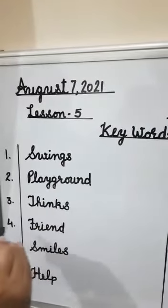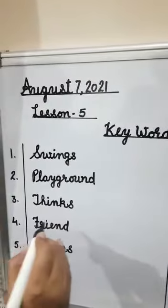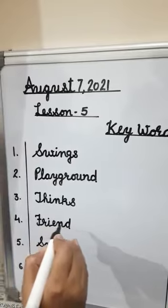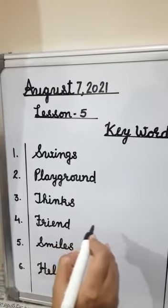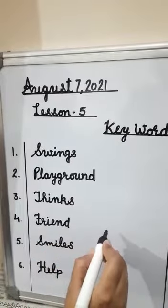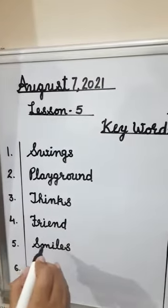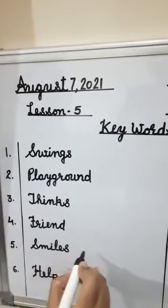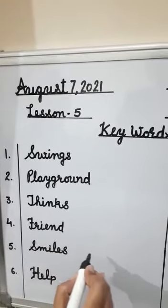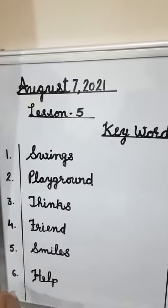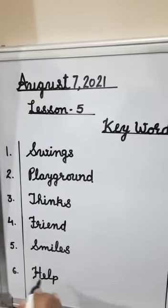Number 3. Things means sochna. Number 4. Friend. Friend means dost.